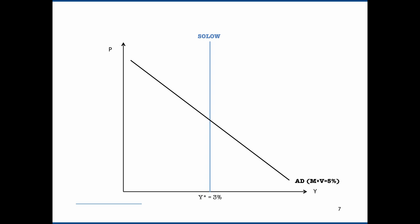I've drawn it here such that total spending equals 5% — we'll assume M plus V is equal to 5%. Given that M plus V is equal to 5% and Y star is equal to 3%, this means inflation is going to be 2%. Every single point along this black line is combinations of P and Y that sum to 5% — this is a mathematical identity. For example, if inflation is 4%, then real GDP growth must be 1%; if real GDP growth is 6%, this implies a deflation rate of 1%, i.e. negative inflation.